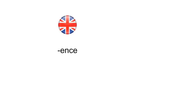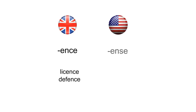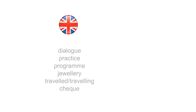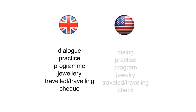Words ending in -ce, like licence and defence, become -se in American English: license and defense. Also, some words in British English drop their ending or middle letters, like dialogue, practise, programme, jewellery, travelled, and travelling, as a written adaptation in American English of how the words are really pronounced: dialog, practice, program, jewelry, traveled, and traveling, and cheque becomes check.